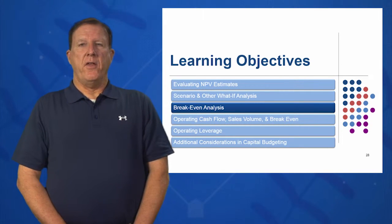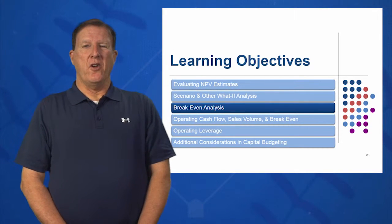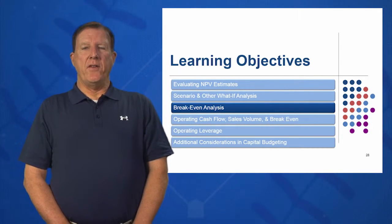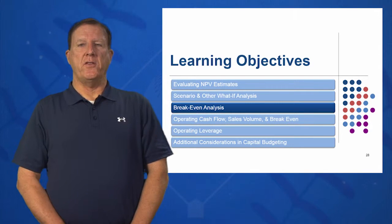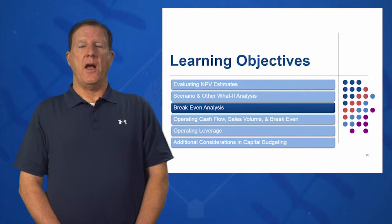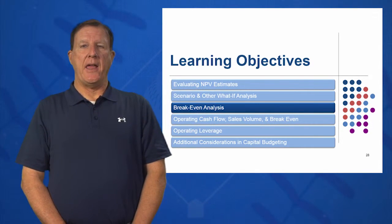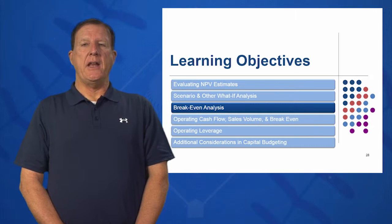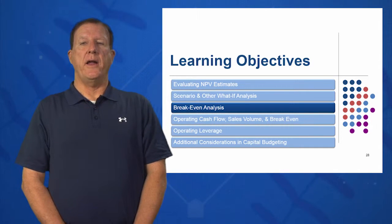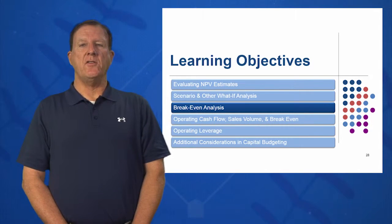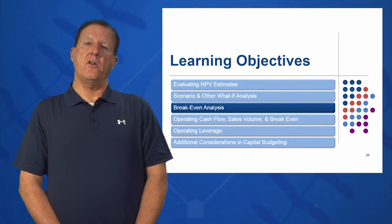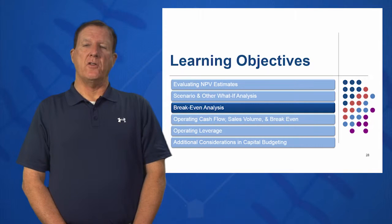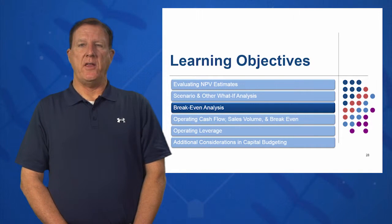In learning objective three, we're going to learn how to do breakeven analysis. We're going to look at several different methods of breakeven. Accounting breakeven — which is the one you've probably seen in econ class or in accounting class — is where EBIT is zero, taxes are zero, and net profit after tax is zero.